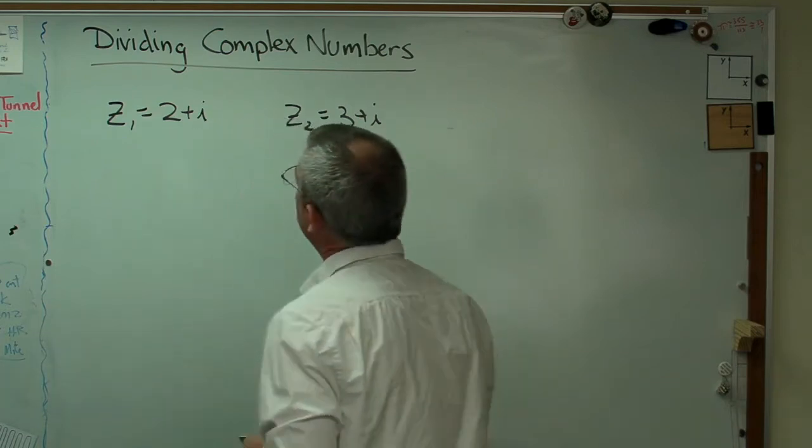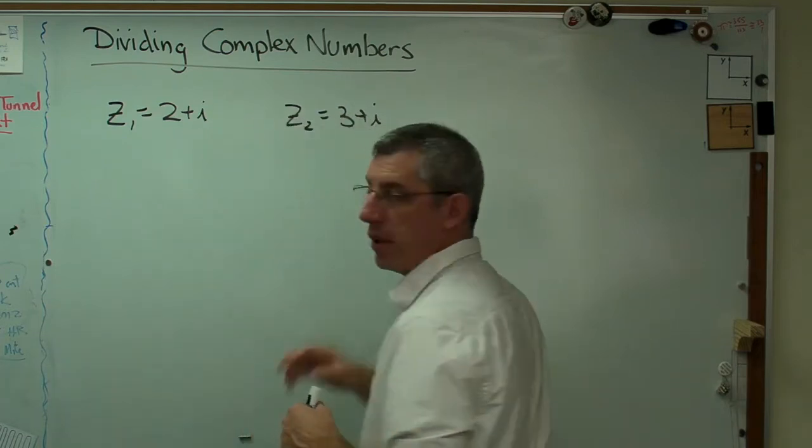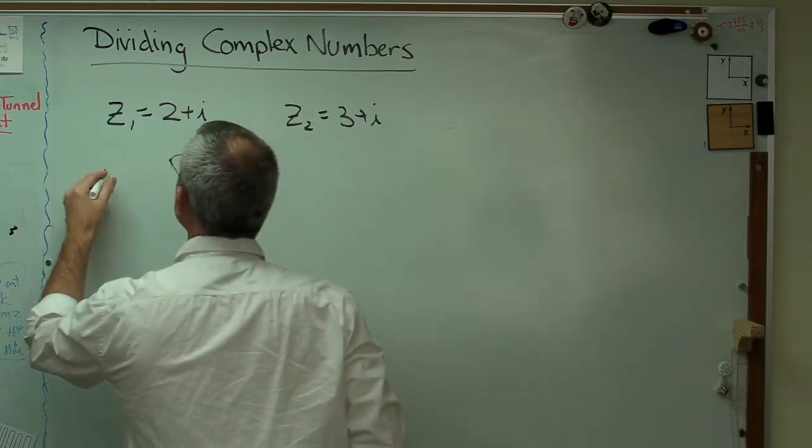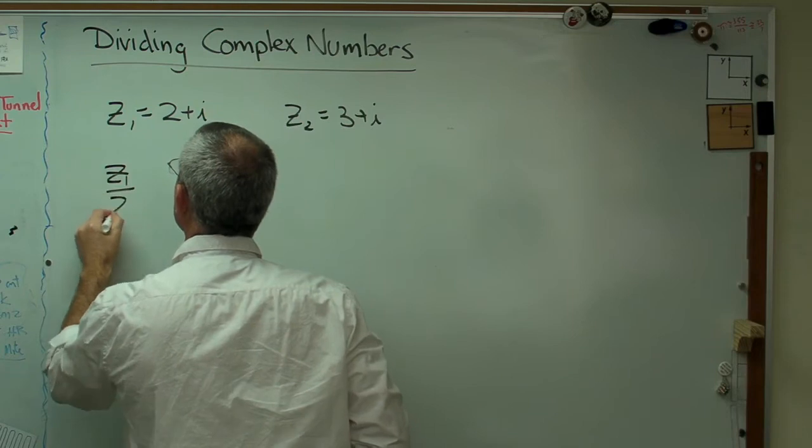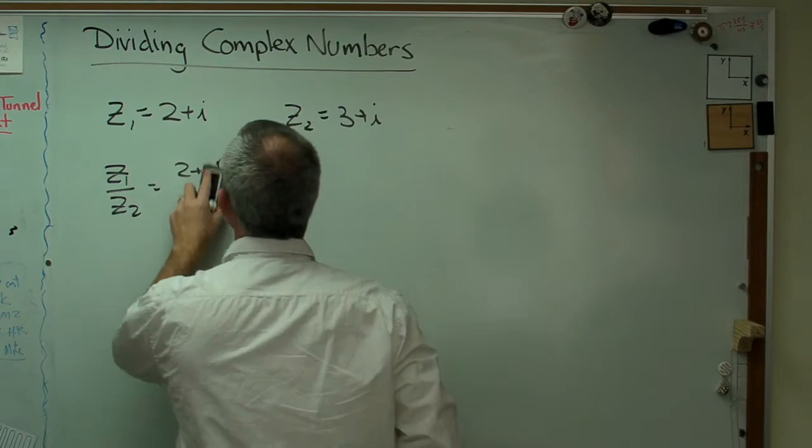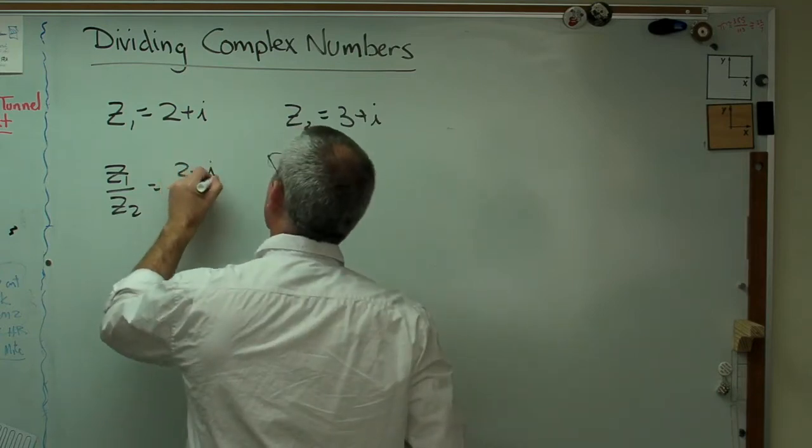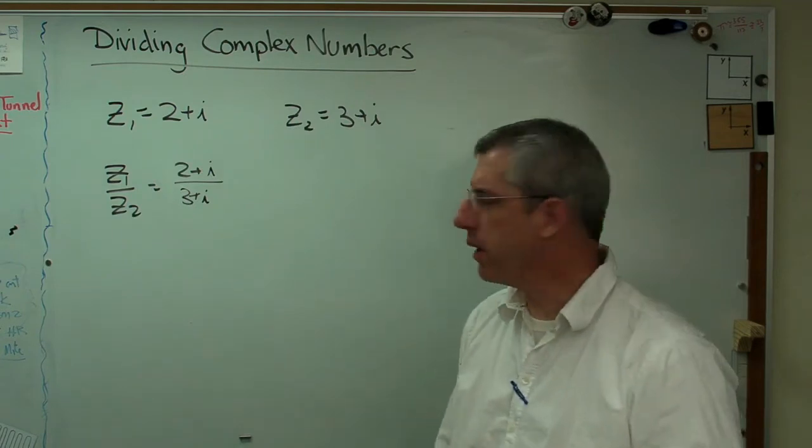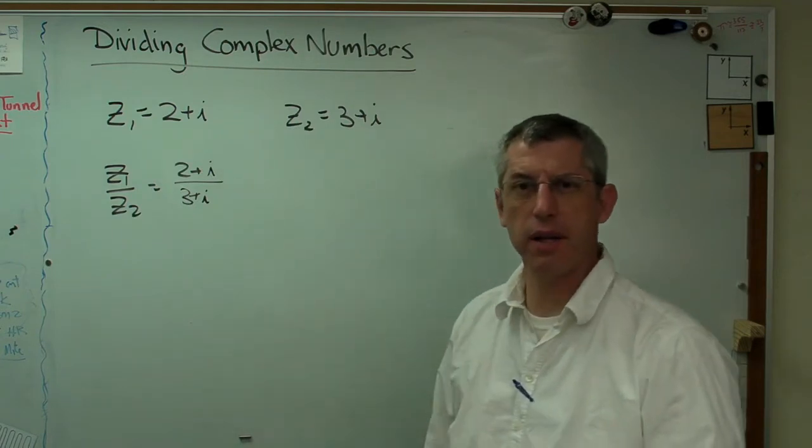So anyway, I have 2 plus i and 3 plus i as the two complex numbers I want to work with. Well, let's just write this out. z1 over z2 equals 2 plus i over 3 plus i. How in the world am I going to do that? I need to be able to simplify that somehow.